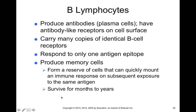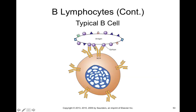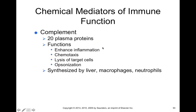Many B lymphocytes can survive from months to years, which is why upon subsequent exposure to the same antigen, your immune system can respond rapidly. Once B cells recognize a foreign antigen, their role is to make antibodies. An activated B cell turns into a plasma cell — basically an antibody factory — and starts pumping out antibodies to attack foreign antigens.